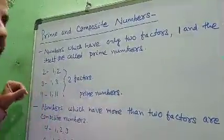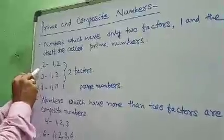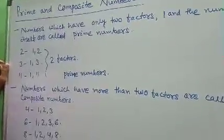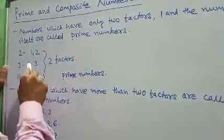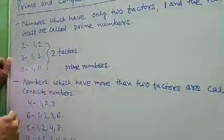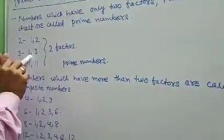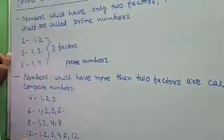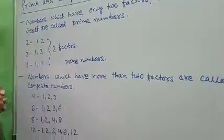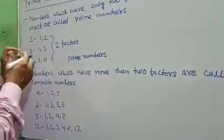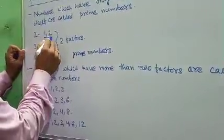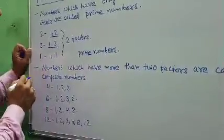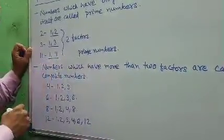So here are some examples. I have taken the number two. The factors of two are one and two. Factors of three: one and three. Factors of eleven: one and eleven. So look at the factors of all three numbers — one and two means two factors, one and three means two factors, one and eleven means two factors.